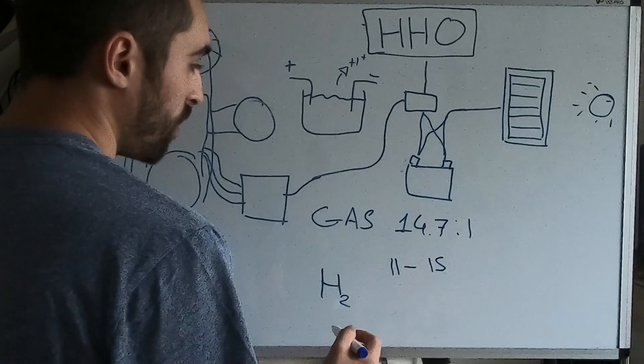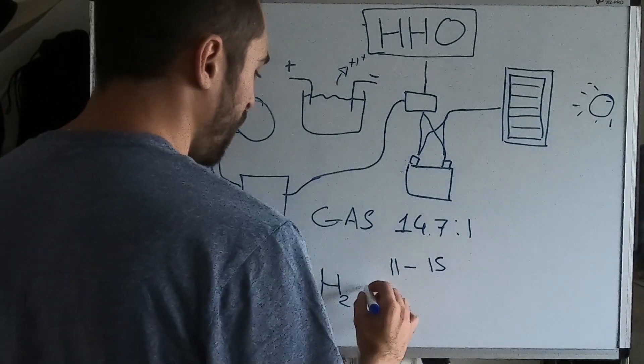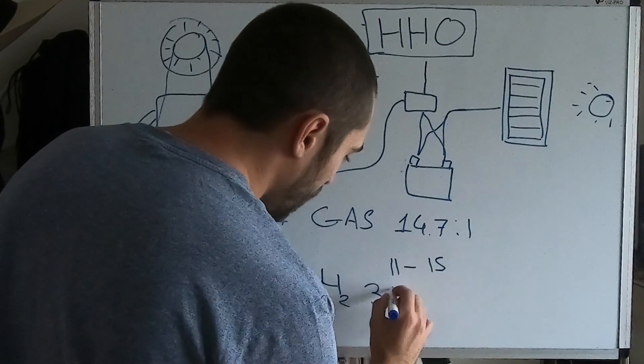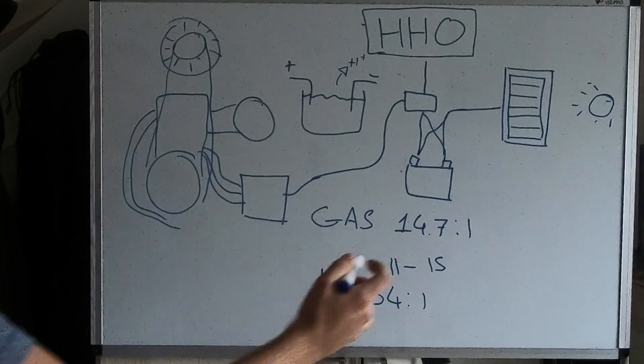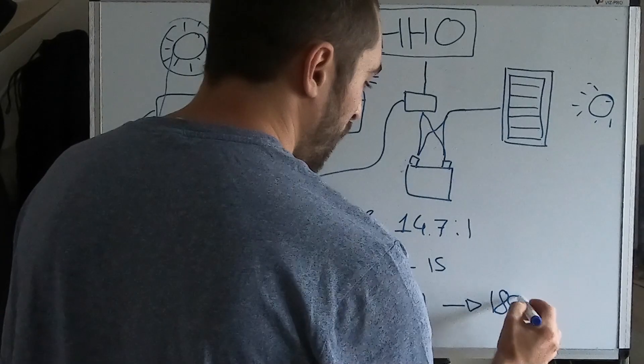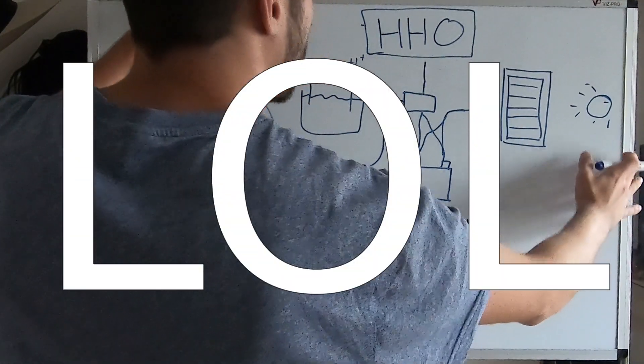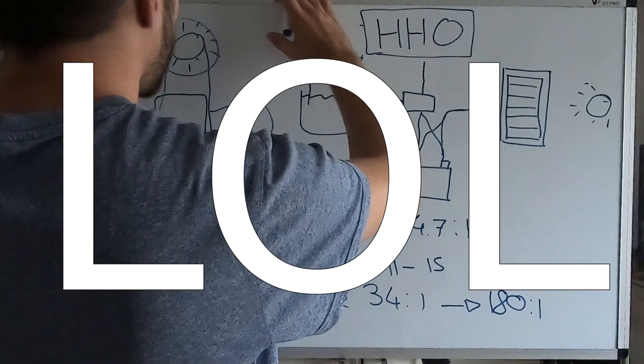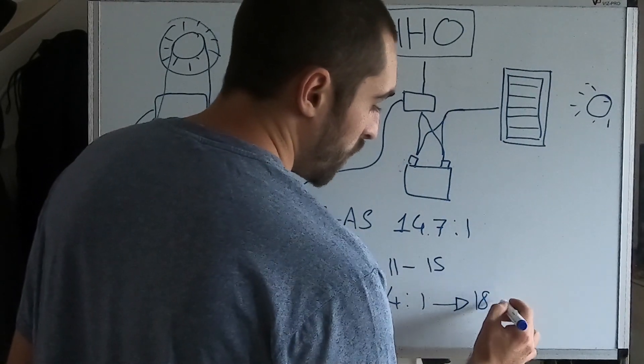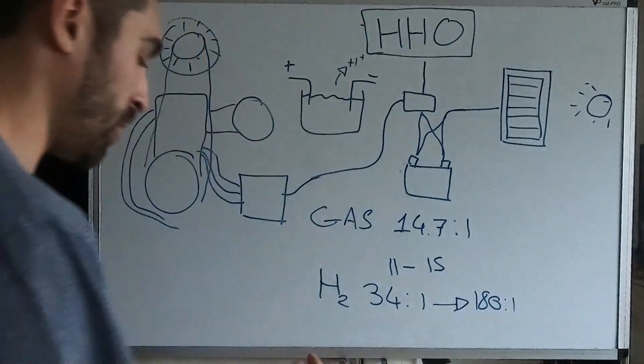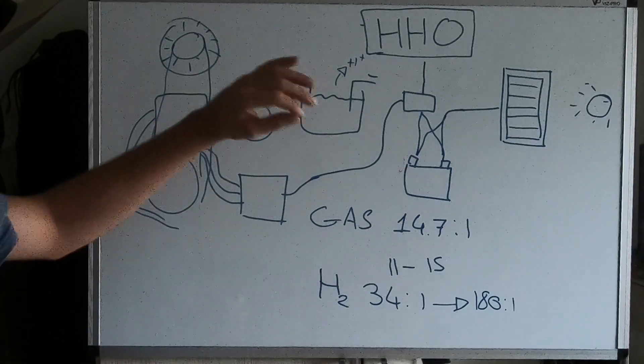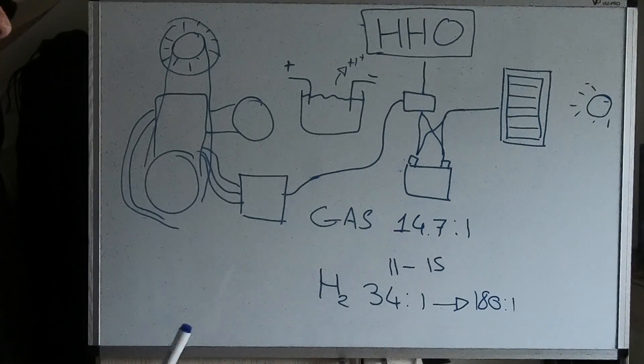Instead, with hydrogen H2, you have the stoichiometric ratio of hydrogen I think is 34 to 1, something around there. But the range, you can go all the way up to 180 to 1. The range on hydrogen can go all the way up to 180 to 1. So we do have a little bit of a cushion in the sense that we can send a really low amount of hydrogen to the engine and it'll still work.